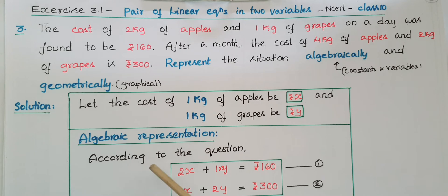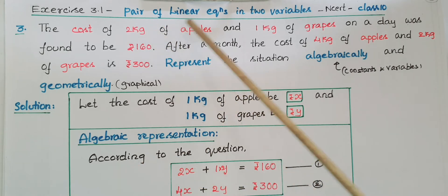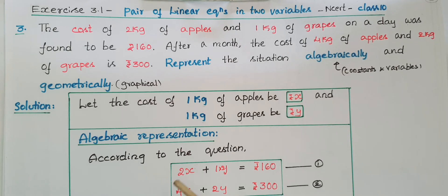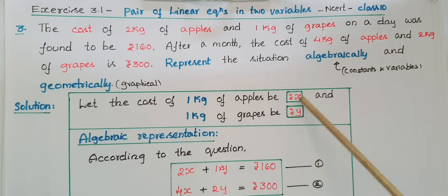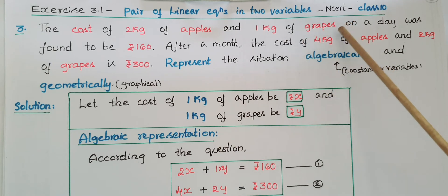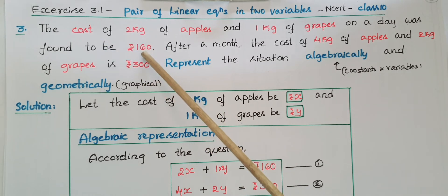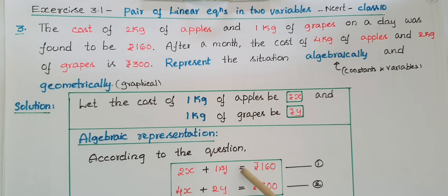Here, 2 kg of apples: since 1 kg is x rupees, 2 kg is 2x rupees. So 2x plus 1 kg of grapes, that is y rupees, plus y is equal to 160 rupees. So the first equation is: 2x + y = 160.